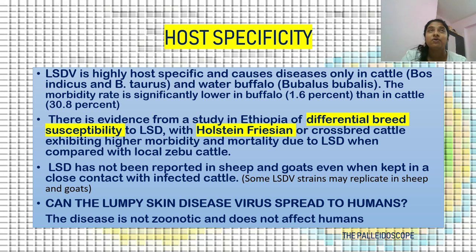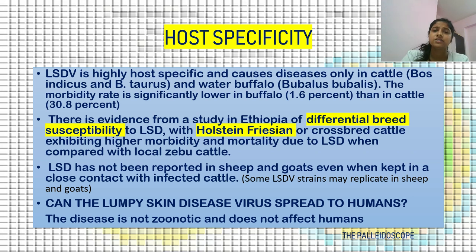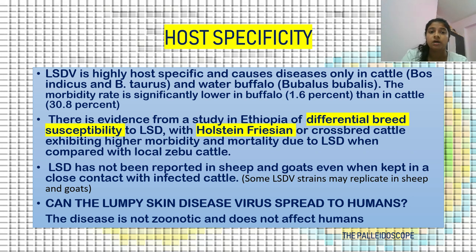Host specificity: LSDV is highly host specific and causes disease only in cattle — Bos bubalis, Bos indicus and Bos taurus — and water buffalo Bubalus bubalis. The morbidity rate is significantly lower in bubalis at 1.6% than in cattle at 30.8%. There is evidence from a study in Ethiopia of differential breed susceptibility; Holstein and crossbred cattle exhibit more morbidity and mortality compared to local Zebu cattle. LSD has not been reported in sheep and goat even when in close contact with infected cattle.